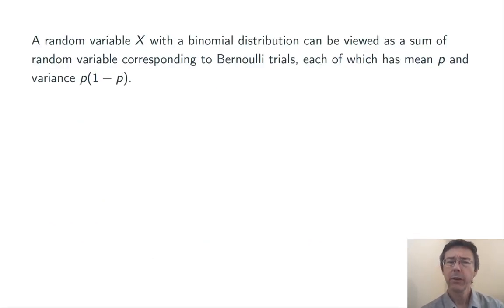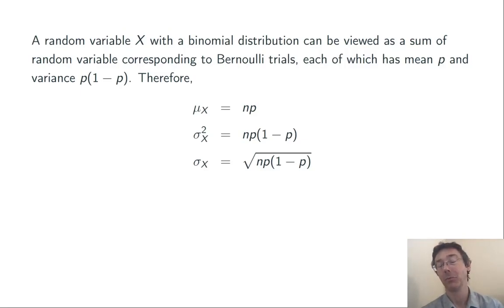A random variable X with a binomial distribution is just a sum of Bernoulli trials, each of which we know has mean p and variance p times 1 minus p. So we ought to be able to compute the mean and variance of X without too much trouble. We get that the mean of a variable X that has a binomial distribution is n times p, and the variance of a random variable X with a binomial distribution b(n, p) is n times p times 1 minus p. That means that the standard deviation is the square root of np times 1 minus p.